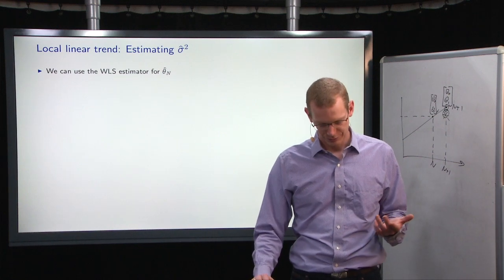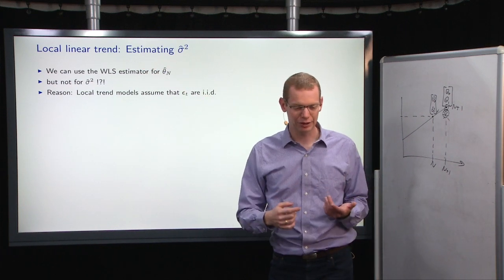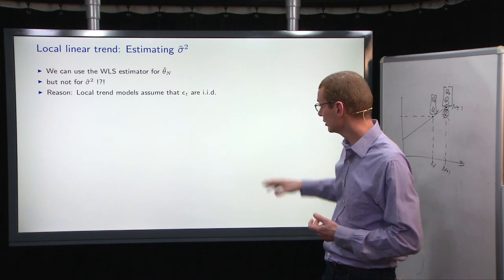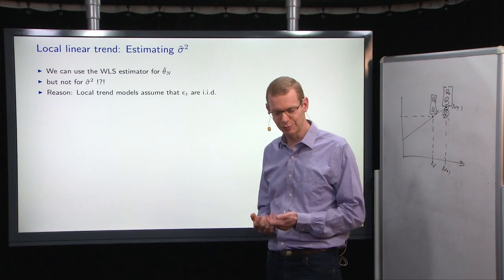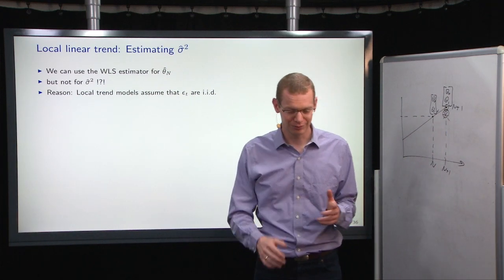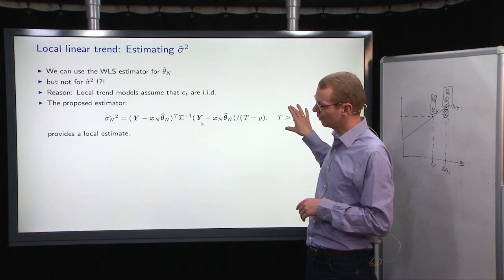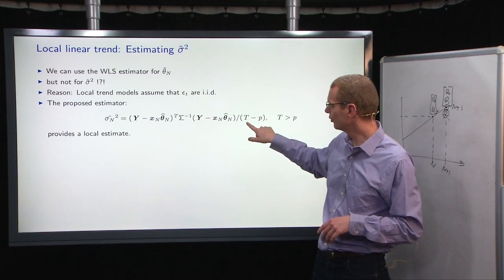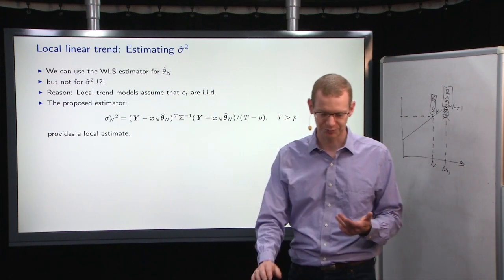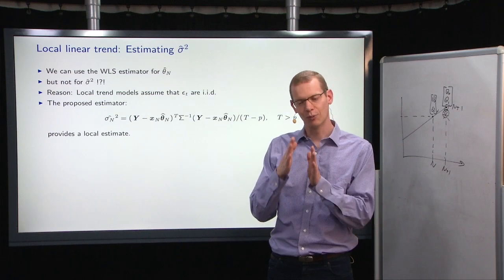Now, how do we, when we look at the estimator for theta n, then we can just do everything that we did. But we have to be careful when we look at sigma square. Because the local trend model does not assume that the epsilons are identically independently distributed. It's just a filter that we run through the model. If it is the case, well, things are more well behaved. But we have to take care of that.